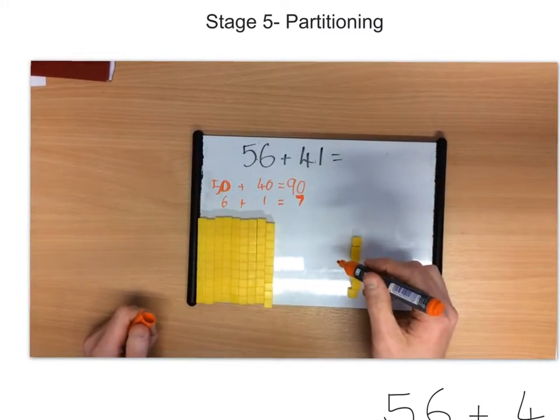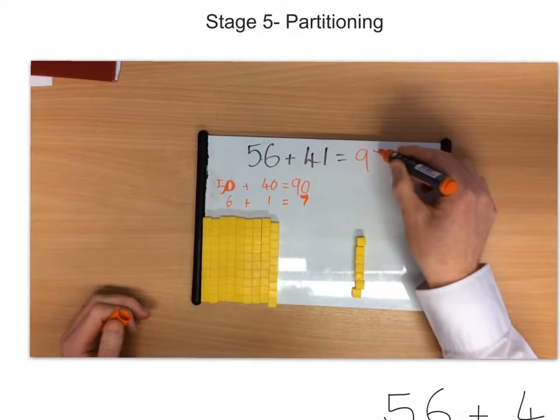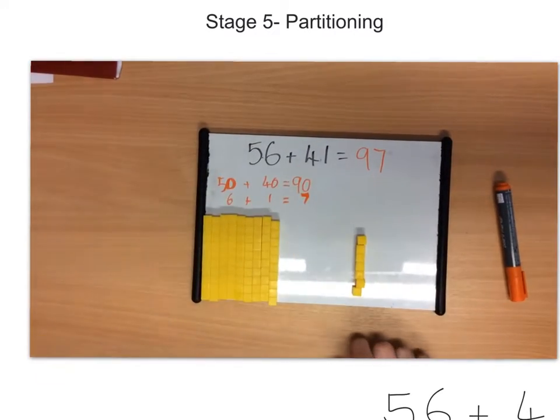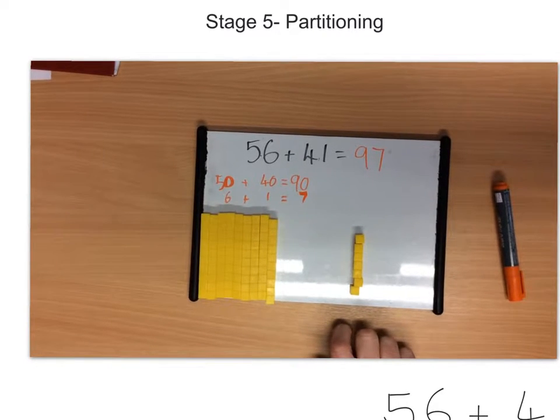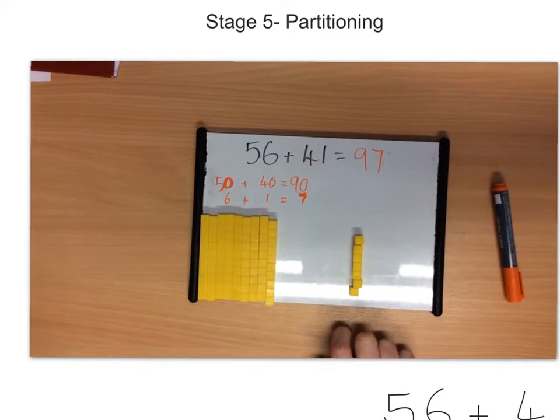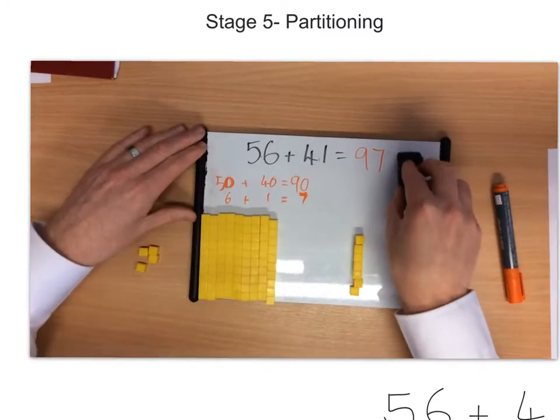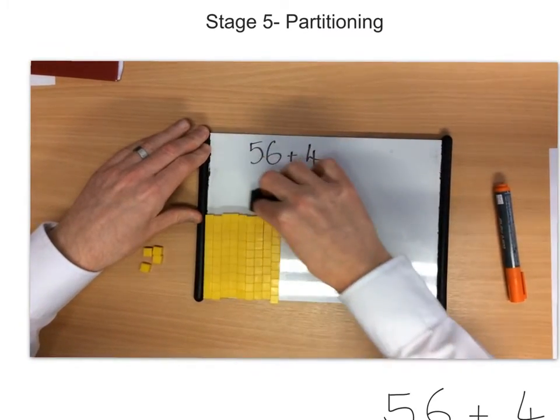So, 90 and 7, add them together, gives us 97. Now, sometimes we'll have questions whereby the children actually have to count across a boundary. So, we might have a different question. We'll use similar numbers, but let's just make that a little bit different.